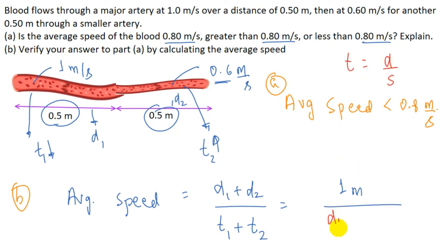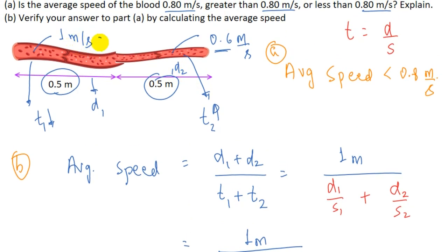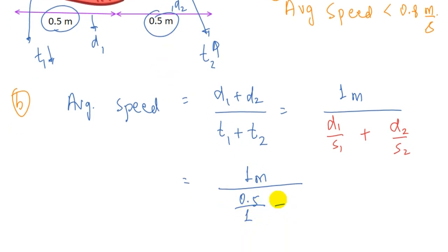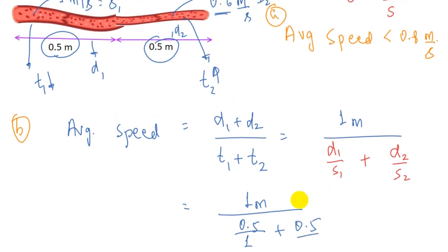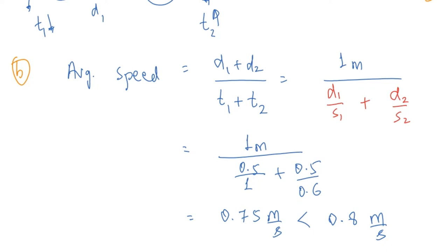Substituting values: numerator is 1 meter; denominator is (0.5/1) + (0.5/0.6). Solving this gives an average speed of 0.75 meters per second, which is indeed less than 0.8 meters per second. This verifies our answer from part a that the average speed is less than 0.8 meters per second.